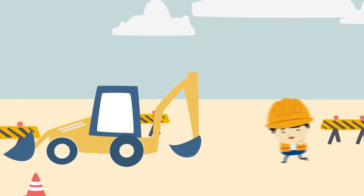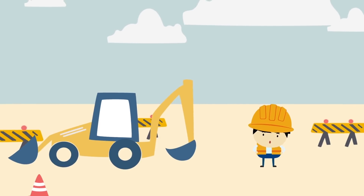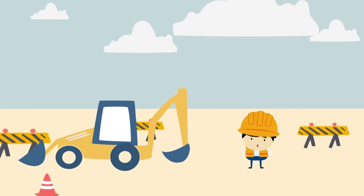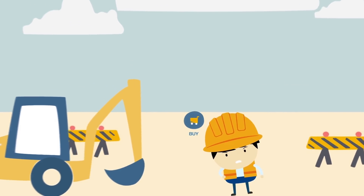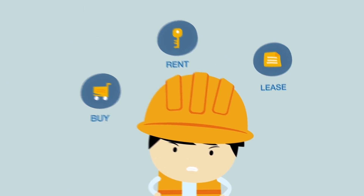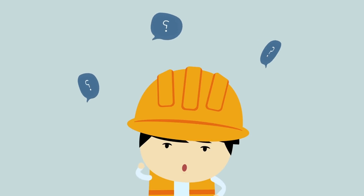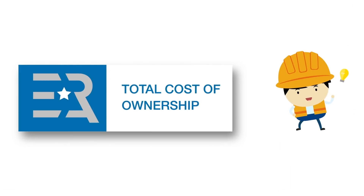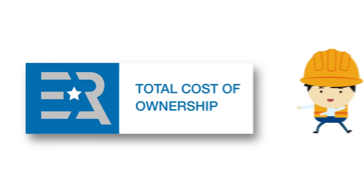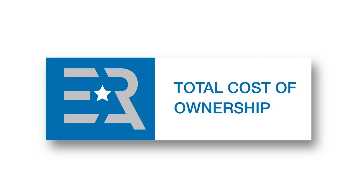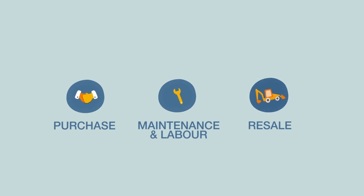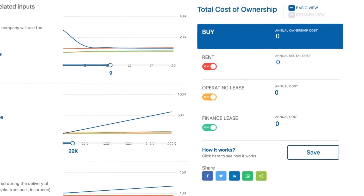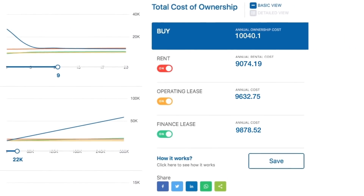So, you need a piece of equipment. You can buy it, rent it or lease it, but which is the right choice for you? The ERA TCO calculator is an independent and free tool that gives you the exact cost of owning a piece of equipment, from purchase to maintenance and labour costs, and allows you to compare it with renting and leasing.